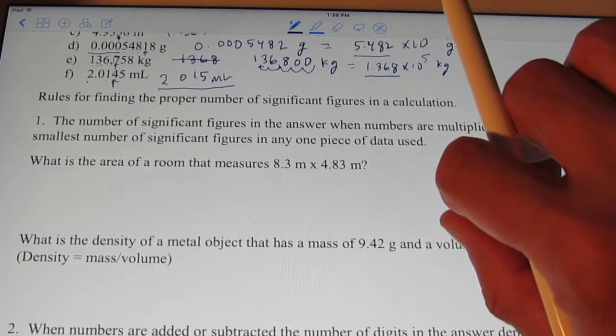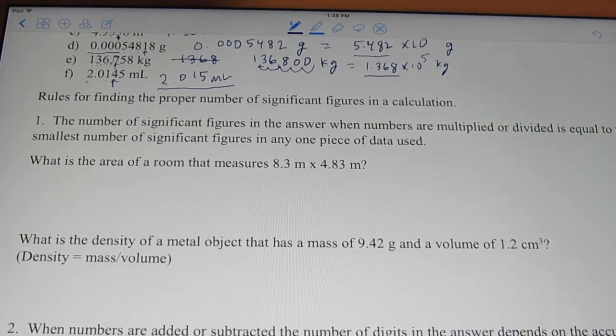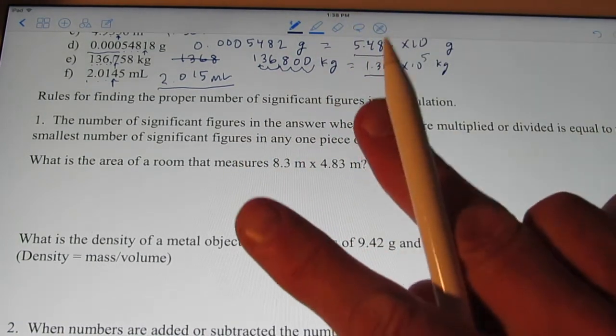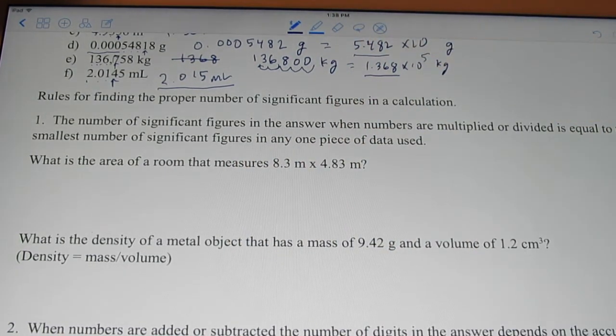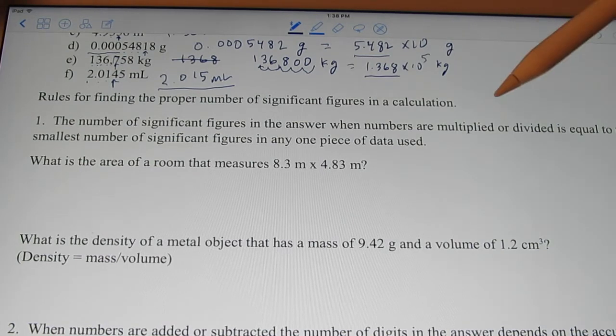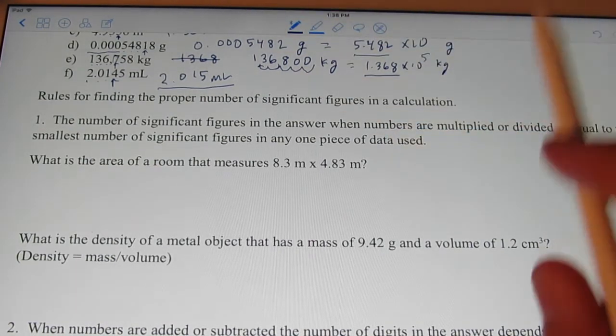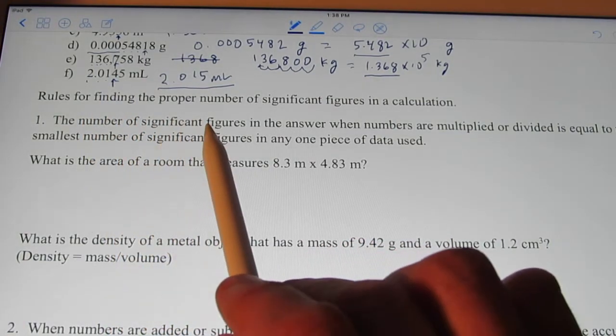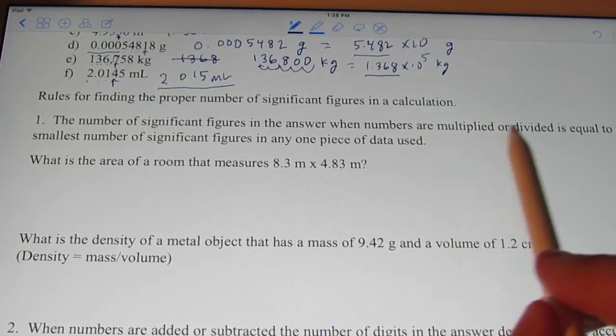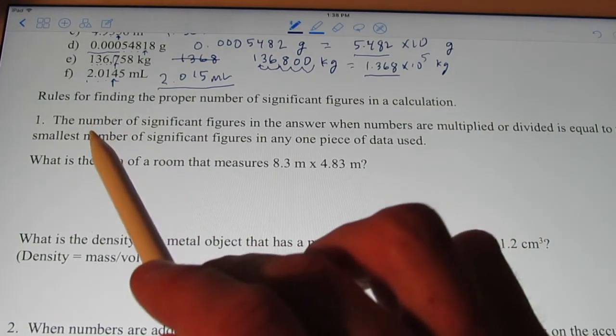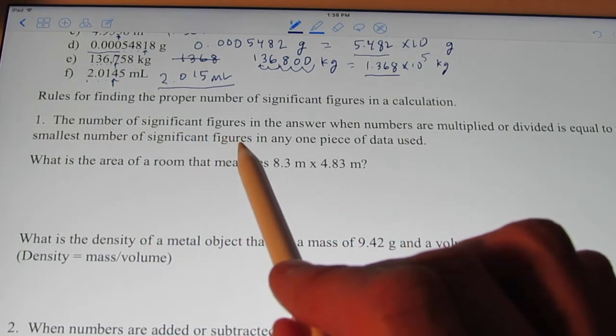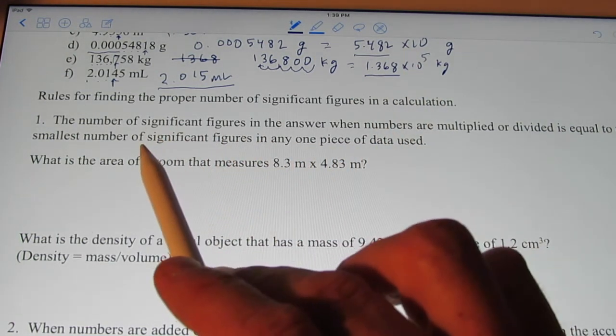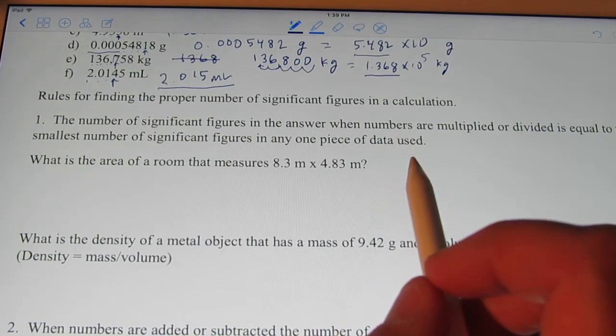So how do we find the proper number of significant figures when we actually do math with these measurements? And so there are two rules we need to follow. One is for multiplying and dividing and the other is for adding and subtracting. So we'll do the multiplication and division rule first. It's pretty simple. The number of significant figures in your answer when numbers are multiplied or divided is equal to the smallest number of sig figs in any one piece of data used. Now what does that mean? The smallest number of sig figs in any one piece of data used.